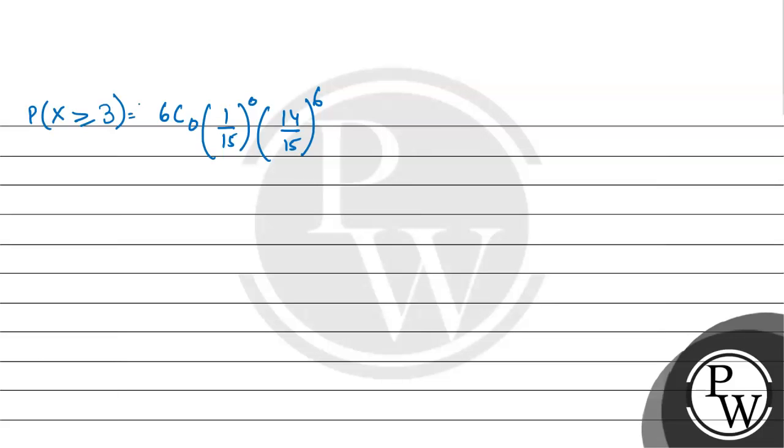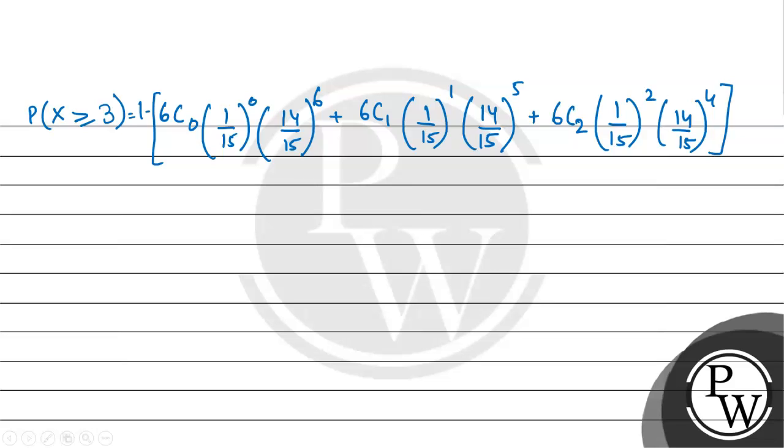This whole thing is being subtracted from 1, so 1 minus 1 by 15 to the power 1 times 14 by 15 to the power 5 plus 6C2 times 1 by 15 to the power 2 multiplied by 14 by 15 to the power 4.